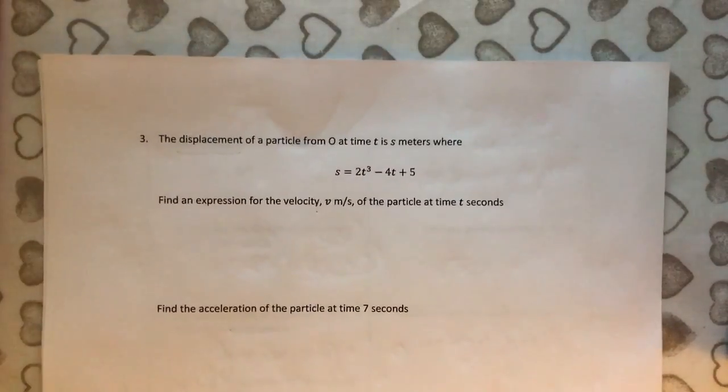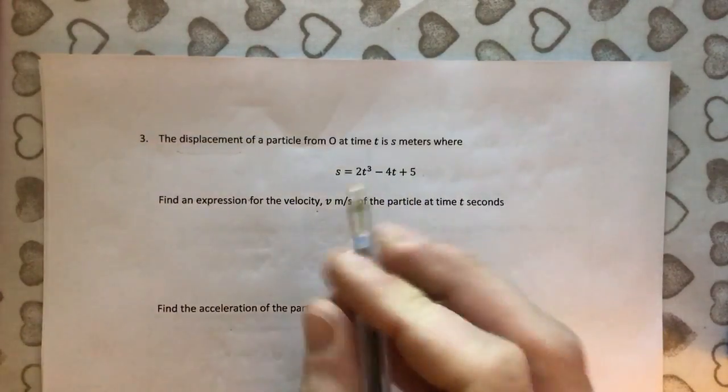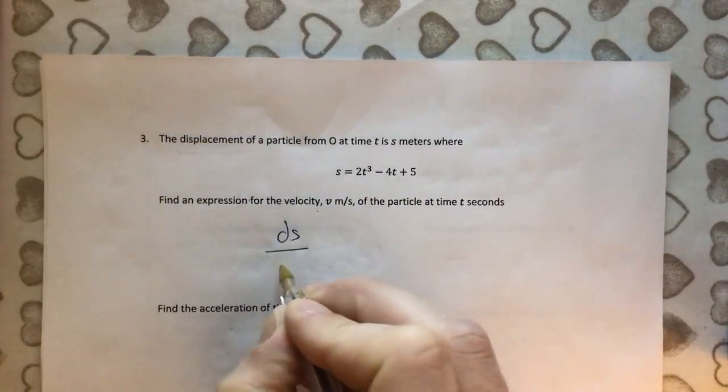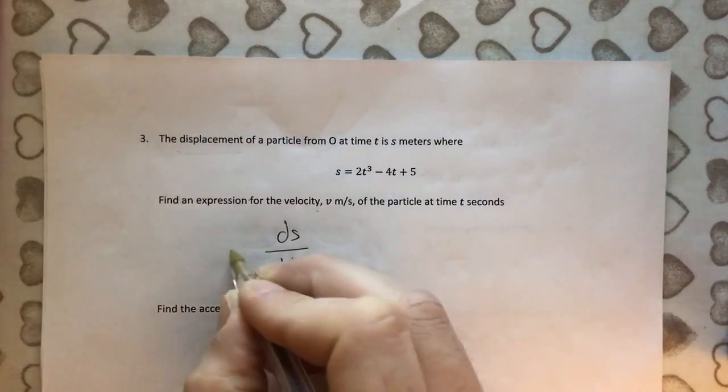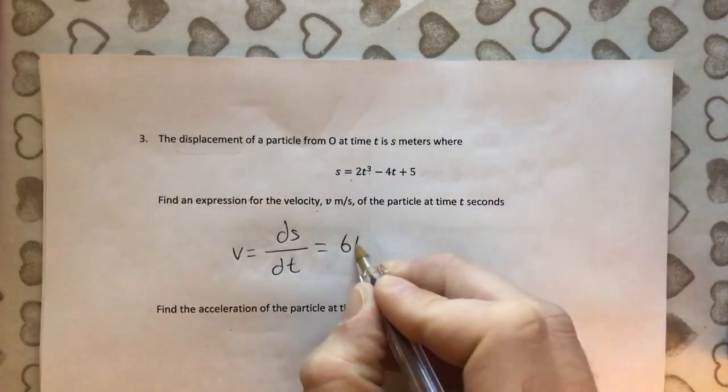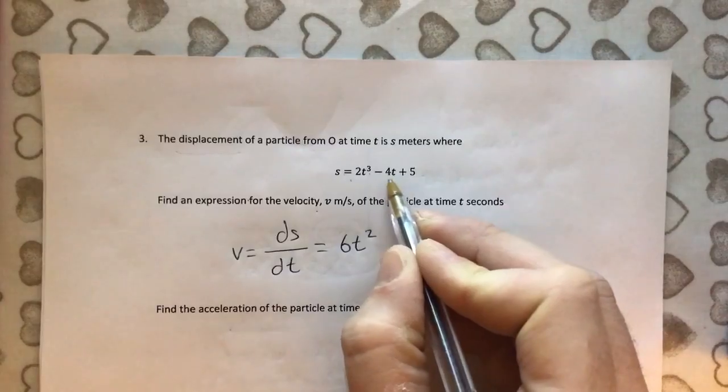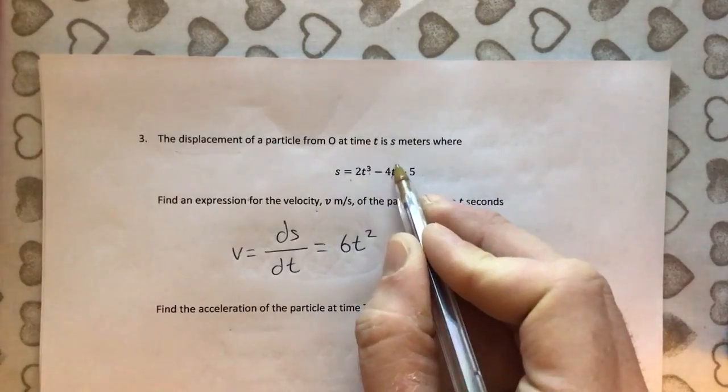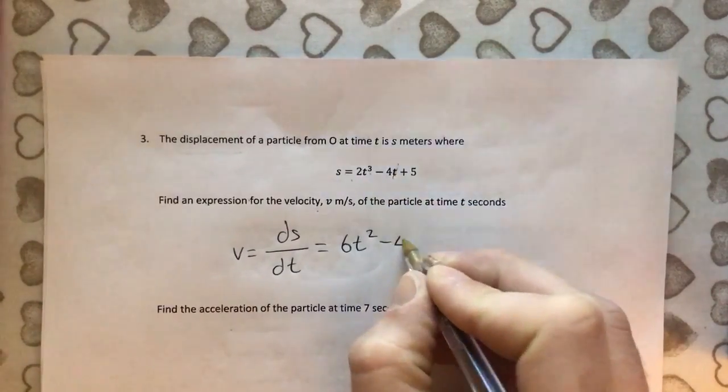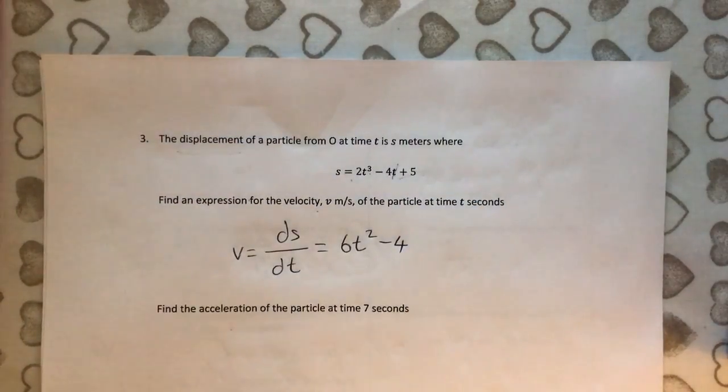So now we know that, we can do this question really quite easily. Find the expression for the velocity. Well, just differentiate it. So dS by dt, which is what v equals, equals. 2 times 3 is 6. Reduce the power. Minus 4t. Well, this is just a linear term, so the t just disappears. Remember, it's the power of 1, so it's just minus 4. And the 5 is a constant. We always just lose the constants. They disappear. So we're done. V equals 6t squared minus 4.